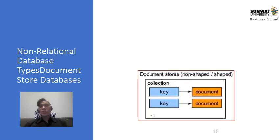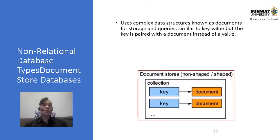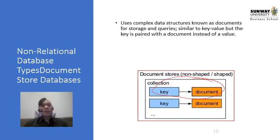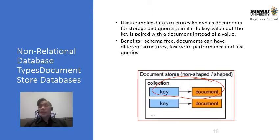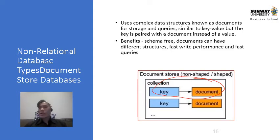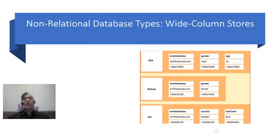Another type of non-relational database is the document store database. This uses more complex data structures known as documents for storage and queries, similar to key-value but the key is now paired with a document instead of a simple value. In the key-value store the key pointed to a particular value, but now the key is attached to an entire document instead. The benefits of this are that it is schema-free, meaning you don't have to design or identify it using a schema, documents can have different structures, and as long as you know the key you can also retrieve the document. It enables fast write performance and fast queries.